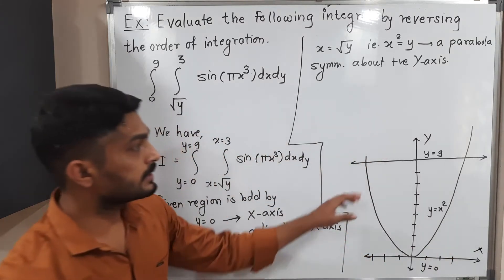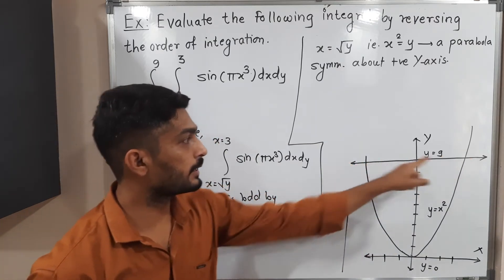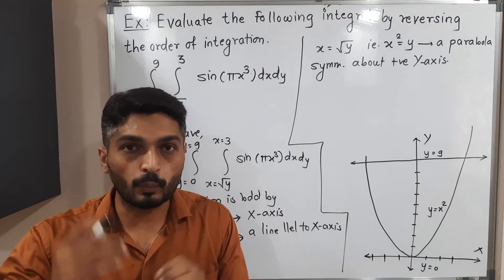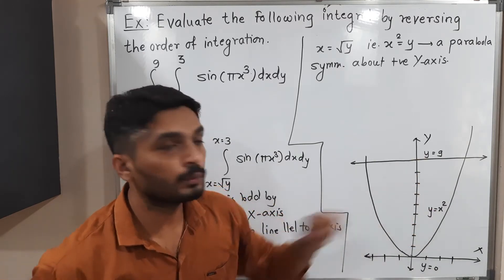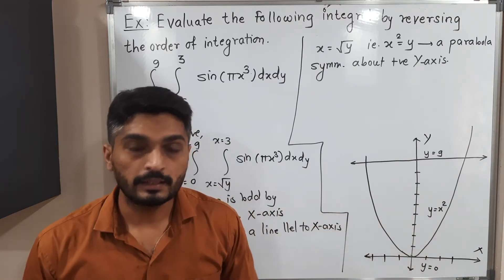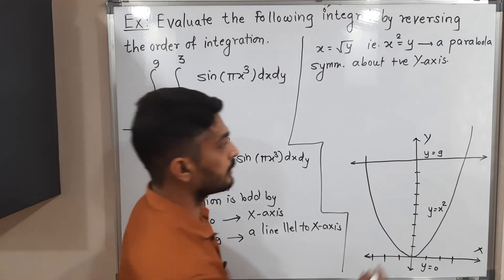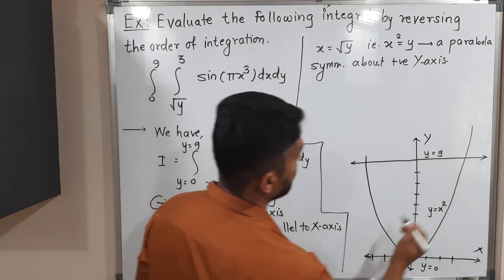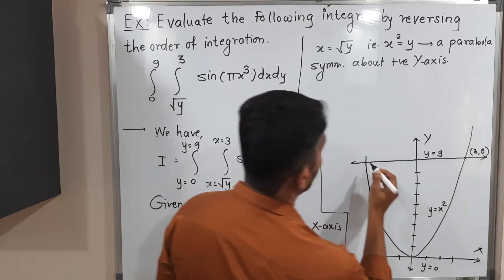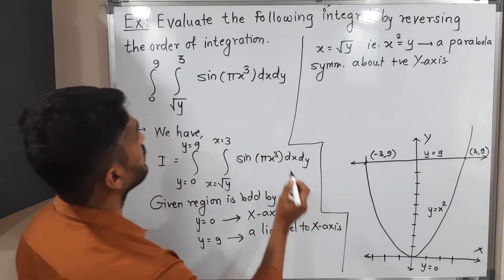This parabola cuts the line y = 9 at two distinct points. To find the points of intersection, I substitute y = 9 into x² = y, giving x² = 9, so x = ±3. Therefore the intersection points are (3, 9) and (−3, 9).